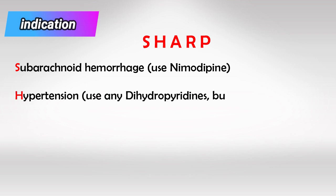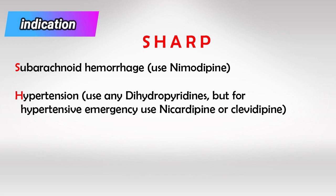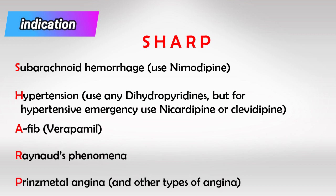H is for hypertension emergency or urgency. A is for atrial fibrillation, and for that we use verapamil. R is for Raynaud's phenomenon, and P is for Prinzmetal's angina and other anginas as well.